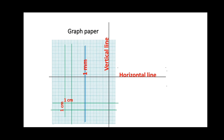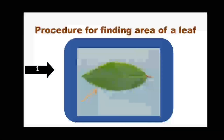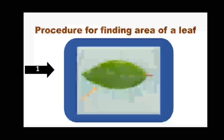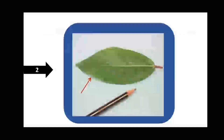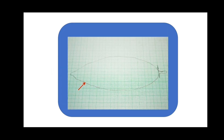It is a very easy procedure for finding the area of an irregular object using graph paper. Let us see the procedure for finding the area of a leaf, which is an irregular object, using graph paper. The first step is to take a graph paper and place the leaf upon it. Step 2: draw an outline of the leaf on the graph paper, then remove the leaf. We will get an outline like this.